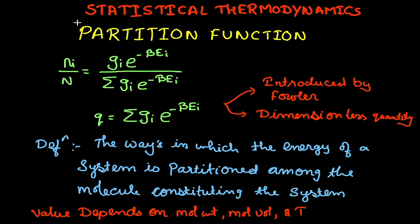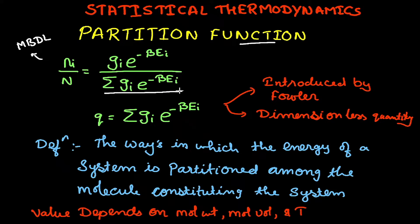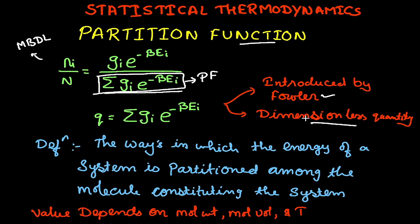Today in statistical thermodynamics we will be quickly looking at partition functions. In the Maxwell-Boltzmann distribution law, the lower term — that is, summation g_i times e raised to minus beta e_i — is known as the partition function. This partition function was introduced by Fowler and is basically a dimensionless quantity, meaning it does not have any unit.